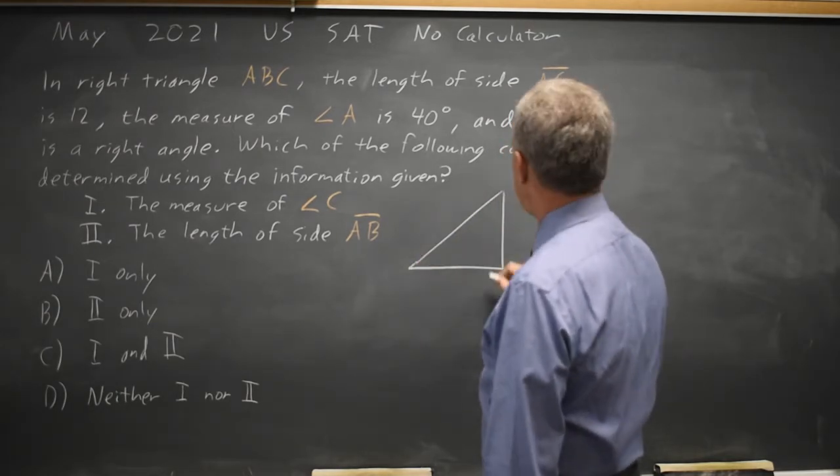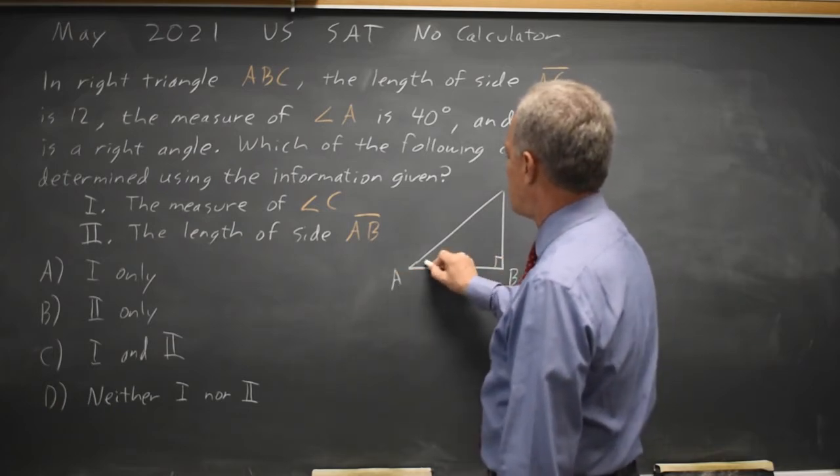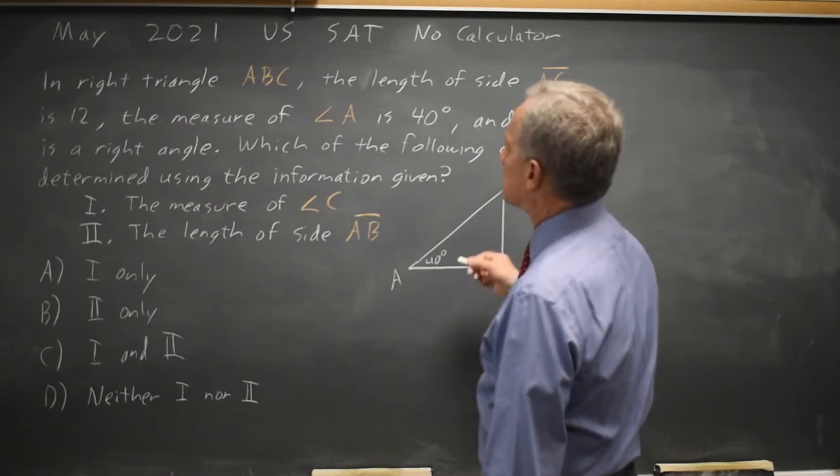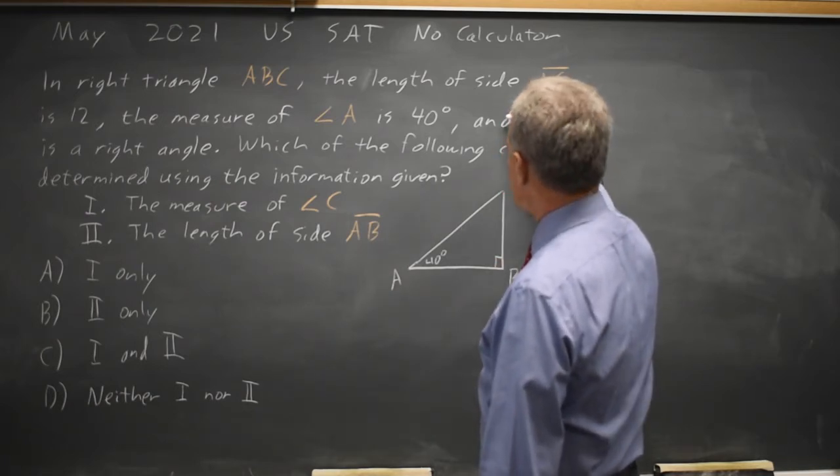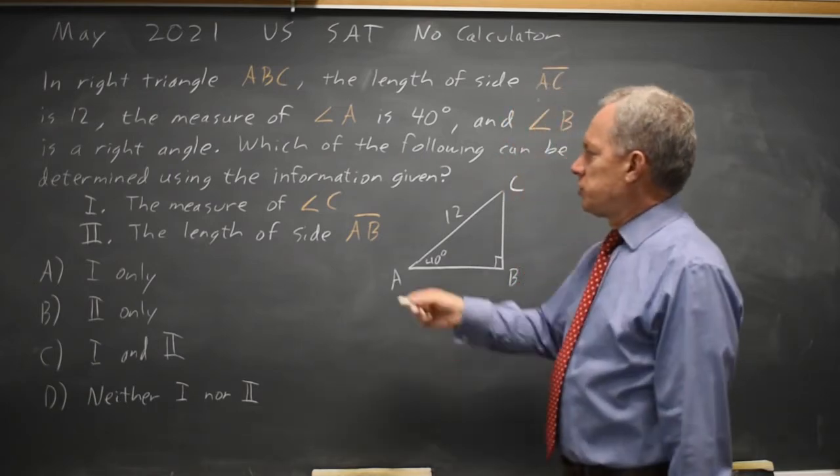where angle B is the right angle, and the measure of angle A is 40 degrees. And side AC has length 12. The question is,